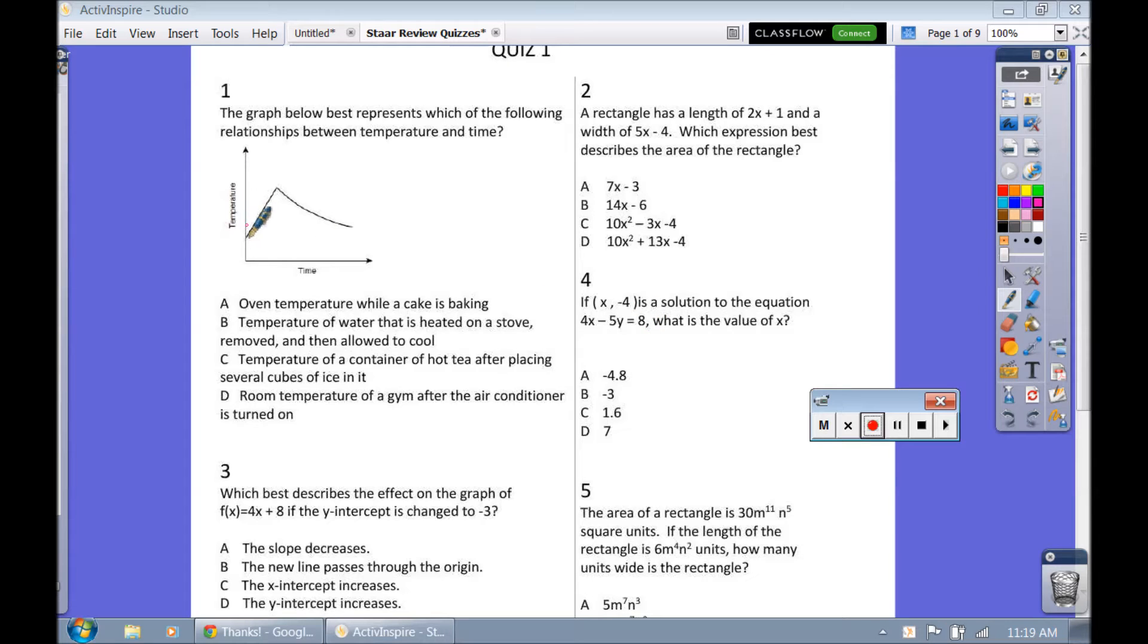The graph below best represents which of the following relationships between temperature and time. So as time is going on, you can see that in the graph, the temperature is increasing at first. It gets all the way up to the top, and then, boom, it switches down and starts to decrease. So let's see which one of these works.